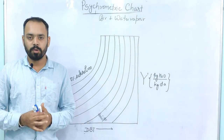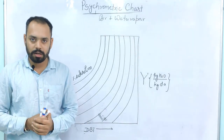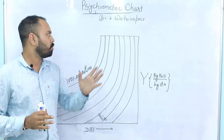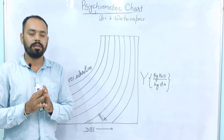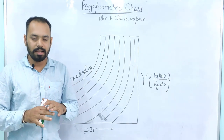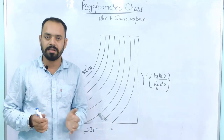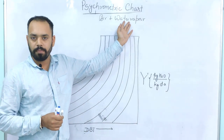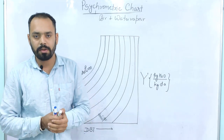Hello students, today's discussion will be on the psychrometric chart. What is psychrometry? It is the study of the air plus water vapor mixture. In the entire discussion, as far as the GATE exam is concerned, the air plus water vapor mixture should be considered as an ideal gas mixture.